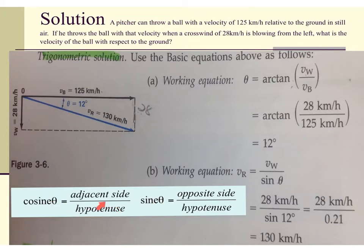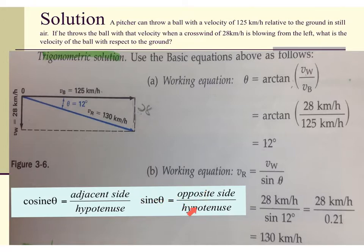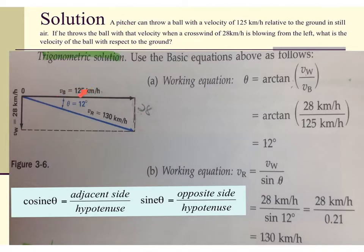With the angle found as 12 degrees, we use the sine formula: sine of 12 equals the opposite divided by the hypotenuse. Rearranging, the hypotenuse equals the opposite divided by sine of 12. Plugging in the values, we get a resultant velocity of 130 kilometers per hour. We could also have used the cosine formula with the adjacent side and arrived at the same result.